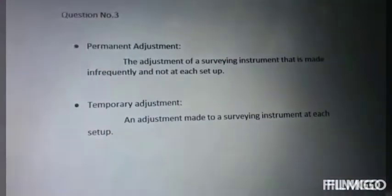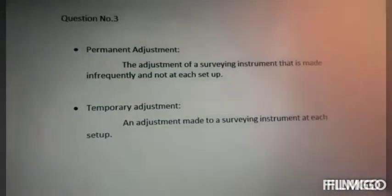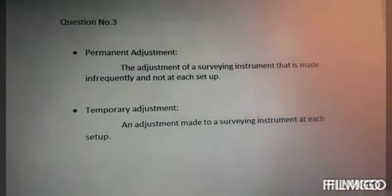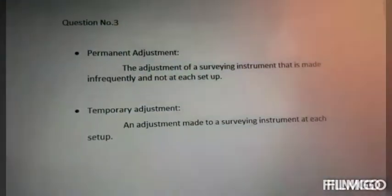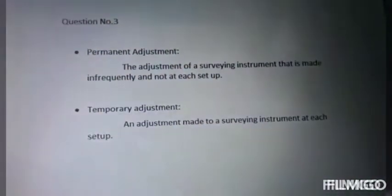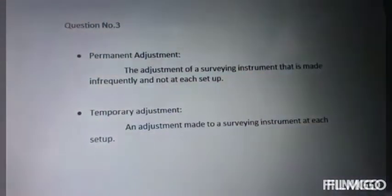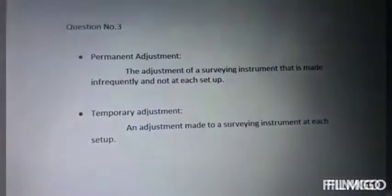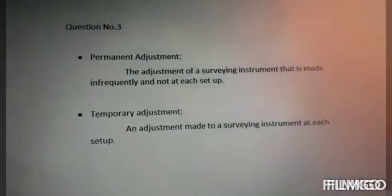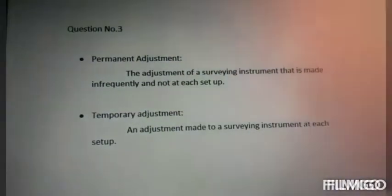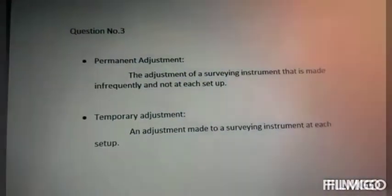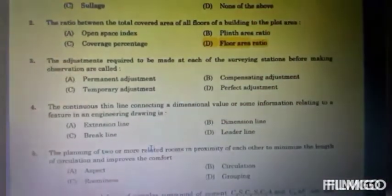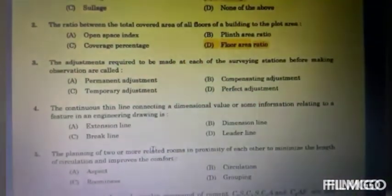In surveying, there are two types of adjustment: Permanent and Temporary. Permanent adjustment is the adjustment of a surveying instrument that is made infrequently and not at each station. Temporary adjustment is an adjustment made to a surveying instrument at each station. So the answer is Temporary adjustment.